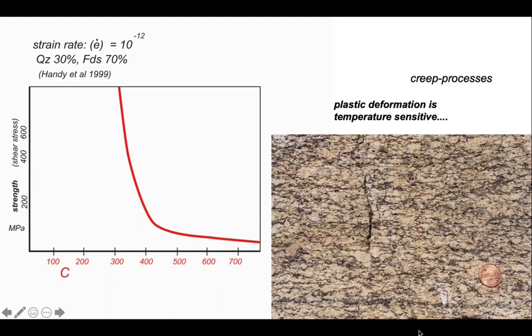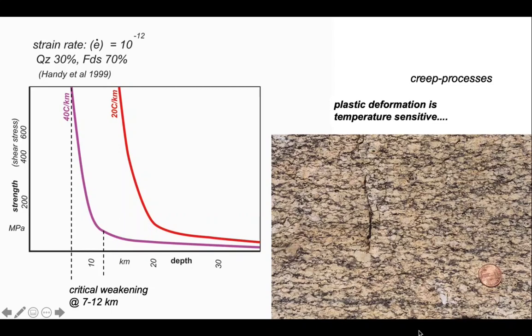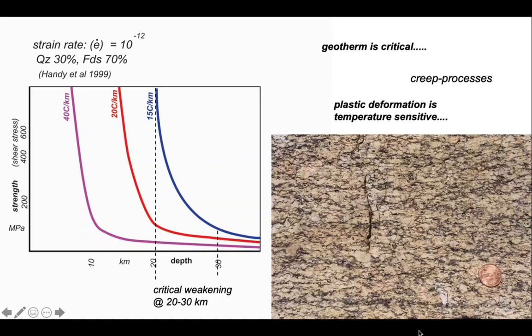Let's do this assuming a geothermal gradient of 20 degrees per kilometer. Now we can see that the catastrophic weakening of the granite occurs between about 14 and 19 kilometers down — shallow depths are strong, deeper depths are very weak. If we change the geothermal gradient, the depth of that critical weakening changes. For a 40 degrees per kilometer geotherm, critical weakening happens between about 7 and 12 kilometers. Conversely, for a cooler geotherm at 15 degrees per kilometer, critical weakening occurs at a deeper 20 to 30 kilometers. So the geotherm is critical in controlling the strength profile.